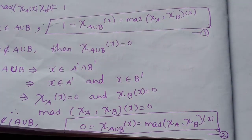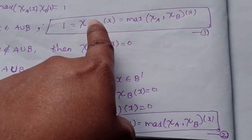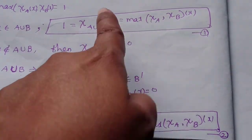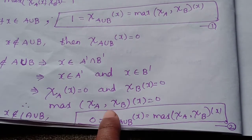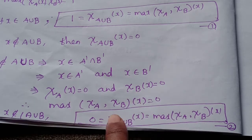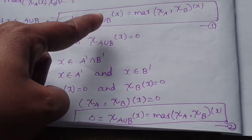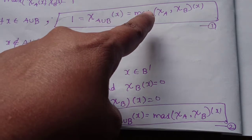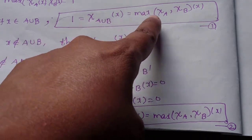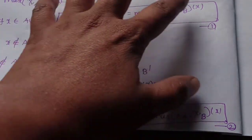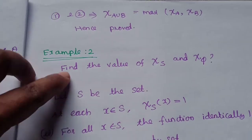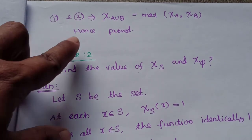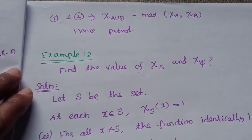From case 1 and case 2: when x belongs to A union B both sides are equal to 1, and when x does not belong to A union B both sides are equal to 0. Therefore psi of A union B equals the maximum of psi of A and psi of B. Hence proved.